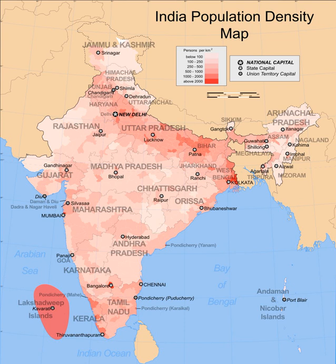Studies of India's population since 1881 have focused on such topics as total population, birth and death rates, growth rates, geographic distribution, literacy, the rural and urban divide, cities of a million, and the three cities with populations over 8 million: Delhi, Greater Mumbai, and Kolkata. Mortality rates fell in the period 1920–45, primarily due to biological immunization. Other factors included rising incomes, better living conditions, improved nutrition, a safer and cleaner environment, and better official health policies and medical care.